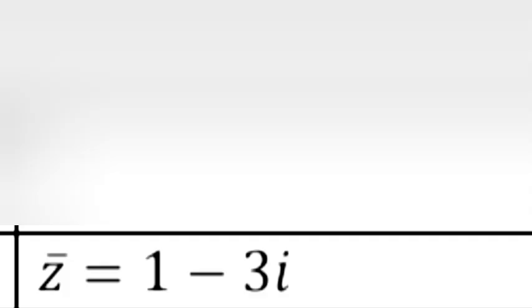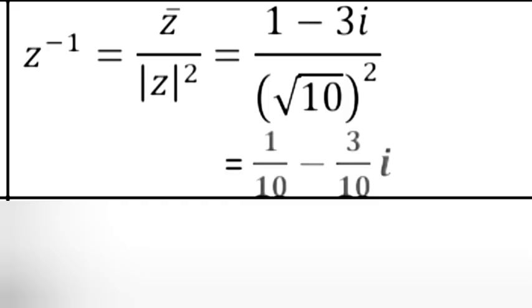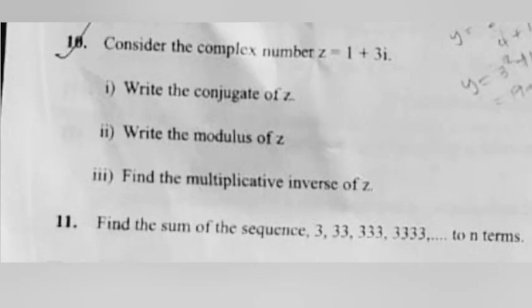Answer: Part i: z̄ = 1 - 3i. Part ii: |z| = √10. Part iii: z^(-1) = z̄/|z|² = (1 - 3i)/10 = 1/10 - 3i/10.